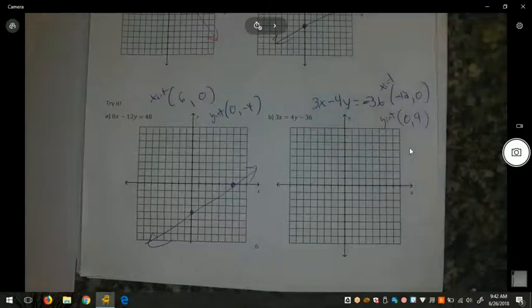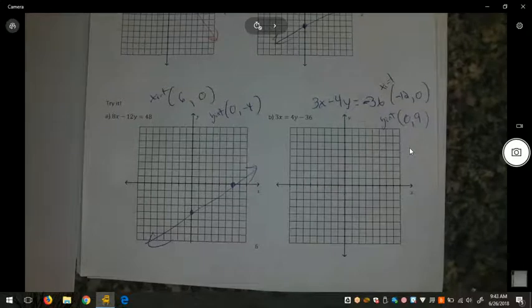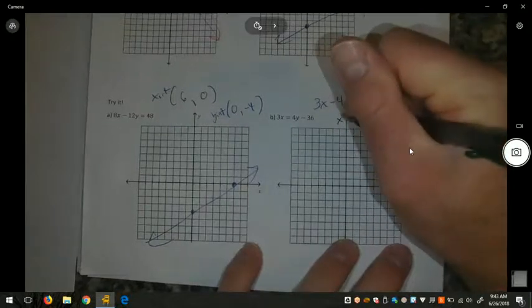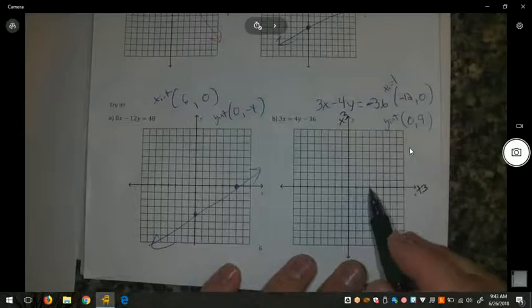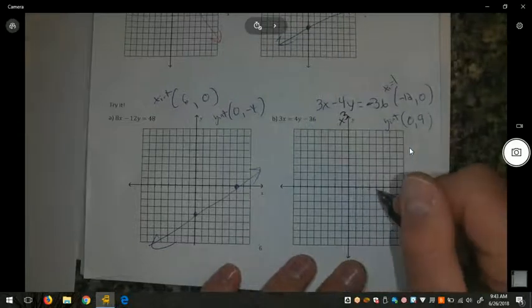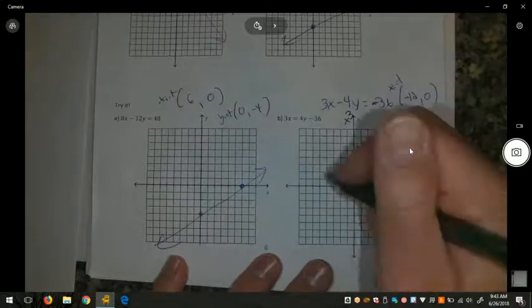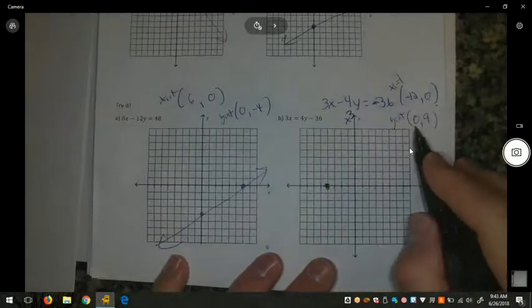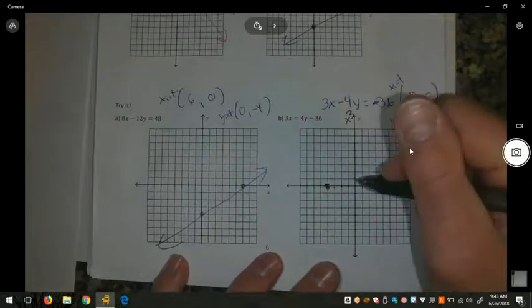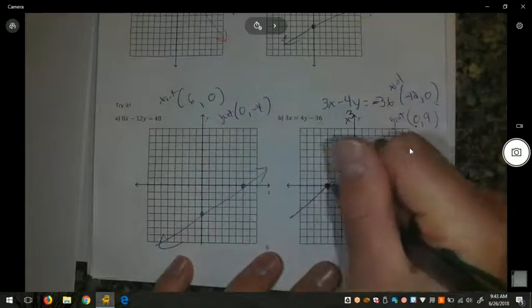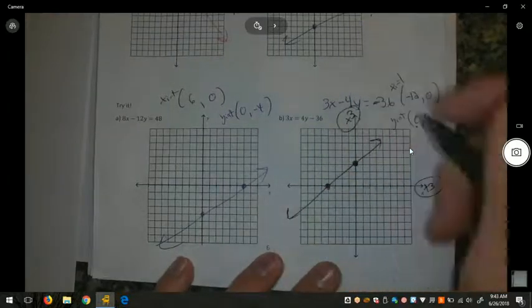The problem is our graph only goes to 8. But we could scale this differently. We could scale it by 2s if we wanted, or by 3s. By 3s might work. I'm going to scale this axis by 3, and this axis by 3. Which means that this is 3, 6, 9, 12. But I need negative 12, 0. So, negative 3, negative 6, negative 9, negative 12. And my y-intercept is 0, 9, so I can go 3, 6, 9. And there's my graph.